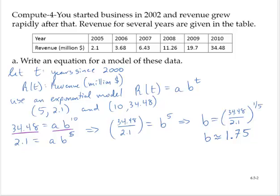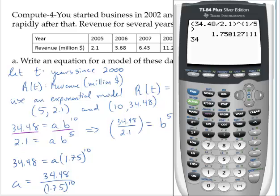Let's go back and solve for a. So I'm just going to use the first equation there. 34.48 is equal to a times 1.75 to the 10th power. So that means that a is equal to 34.48 divided by 1.75 to the 10th power is about 0.128.